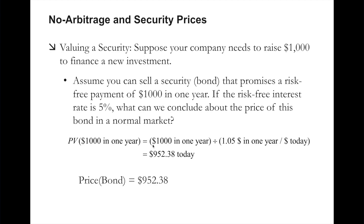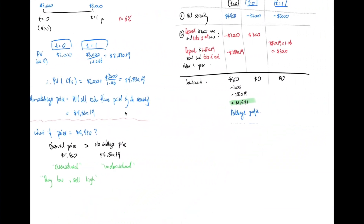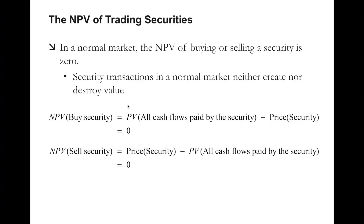On the other hand, if you're selling this bond for $952.38, your benefit is receiving $952.38 today, and your cost is paying out $1,000 in one year, whose present value discounted at 5% is also $952.38. So again, benefit and cost are the same, and the net present value is zero. This means security transactions — such as raising, selling, or buying a bond — in a normal market will neither create nor destroy value.